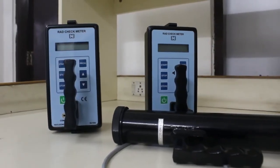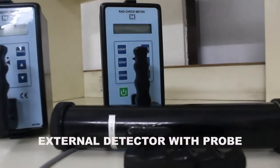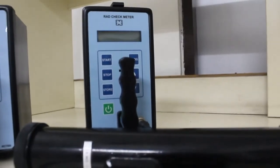There are two models in RadCheck Meter. One is external detector with probe, the other one is designed with built-in detector.